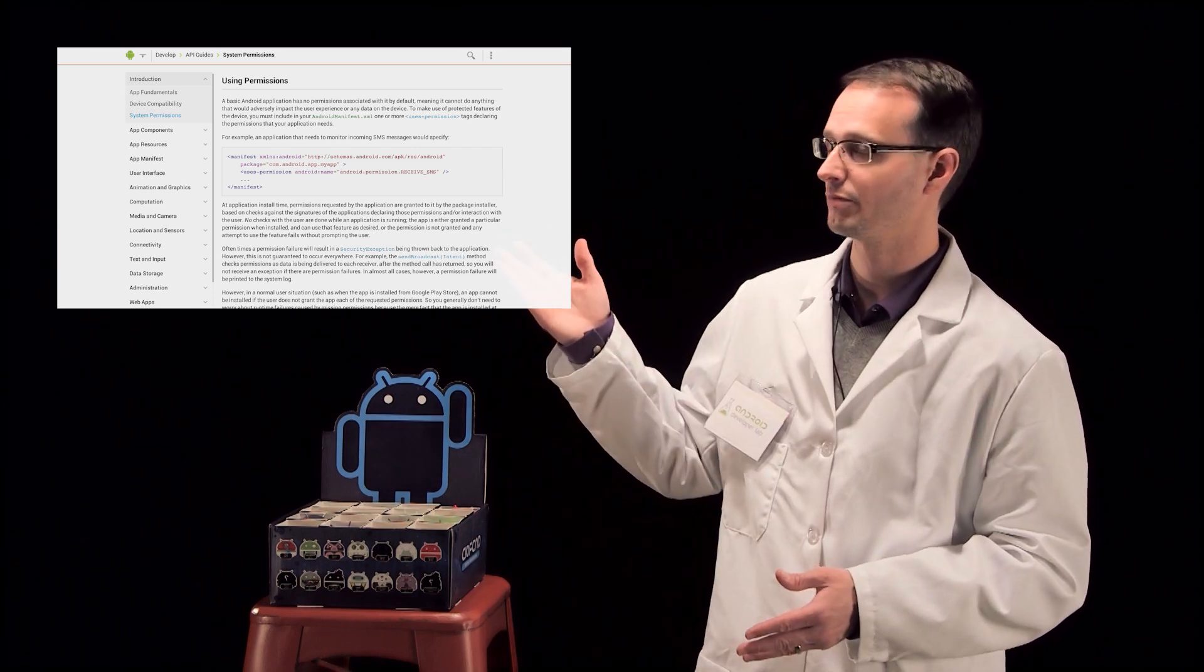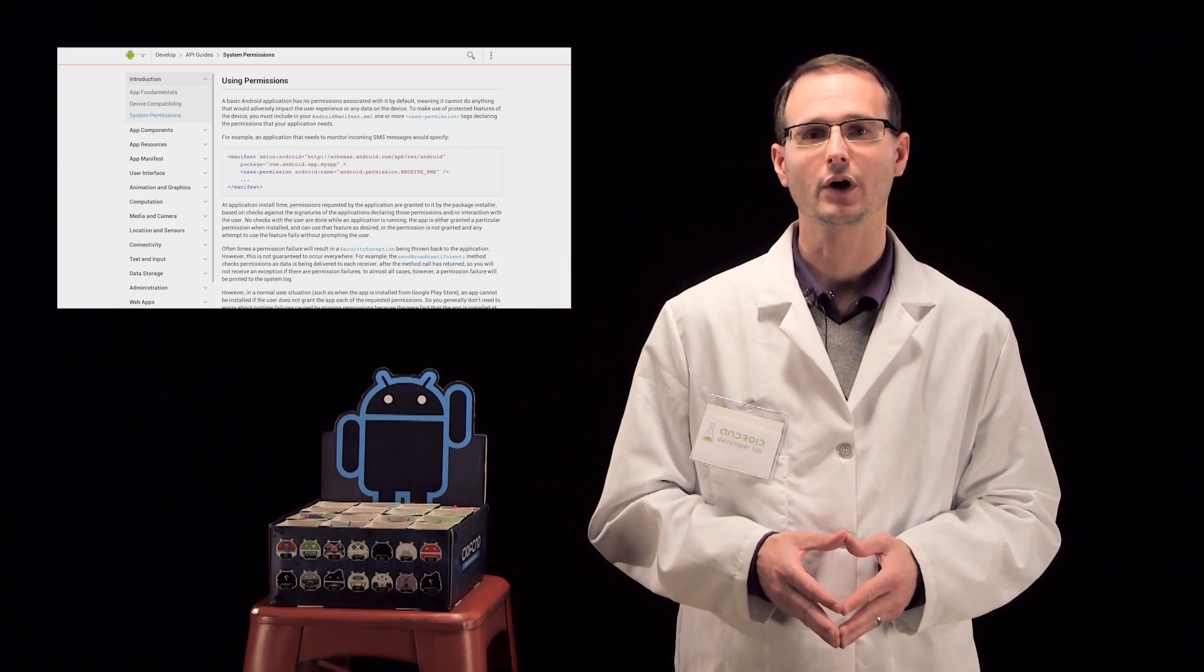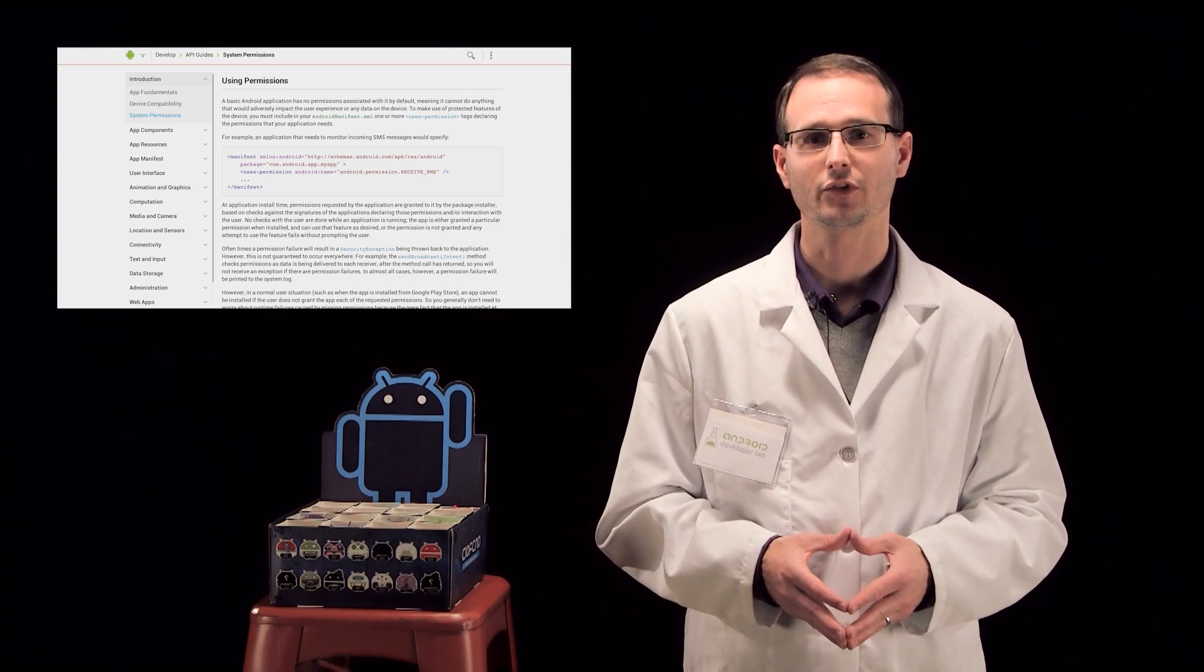Rather than asking the user each time an app tries to access something sensitive, you declare the permissions that your app requires in its manifest. You can get a list of all the permissions your app may require here at the Android developer site.